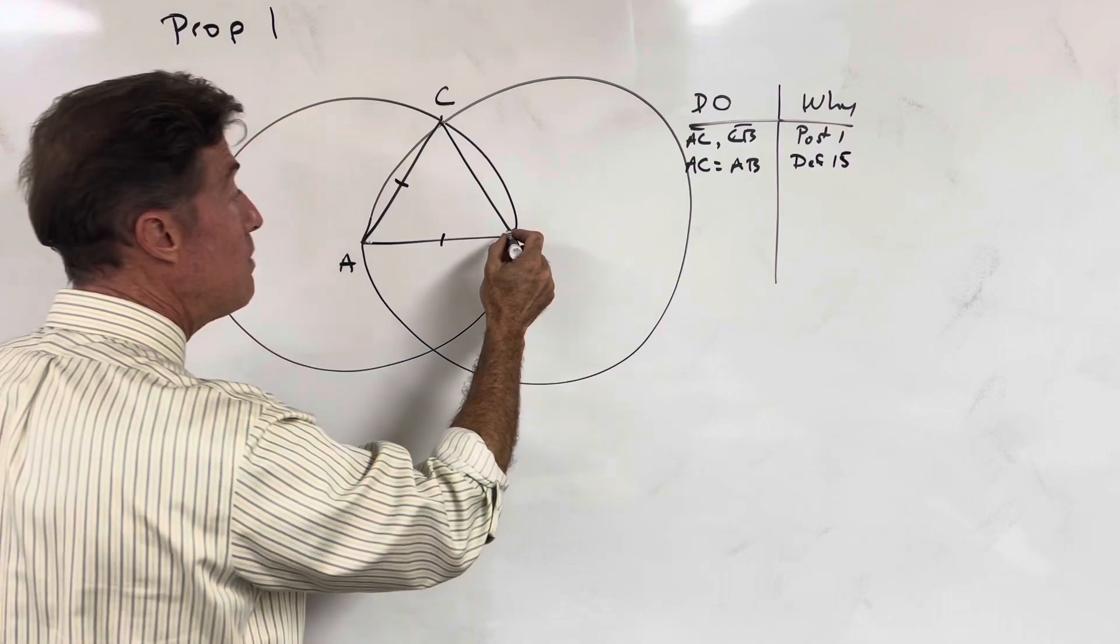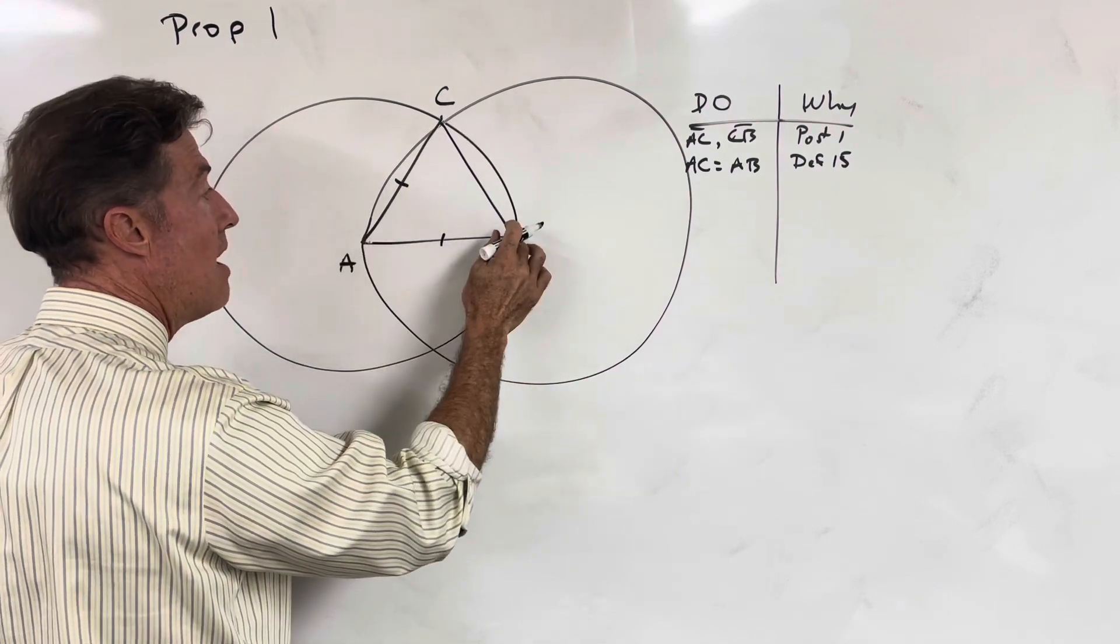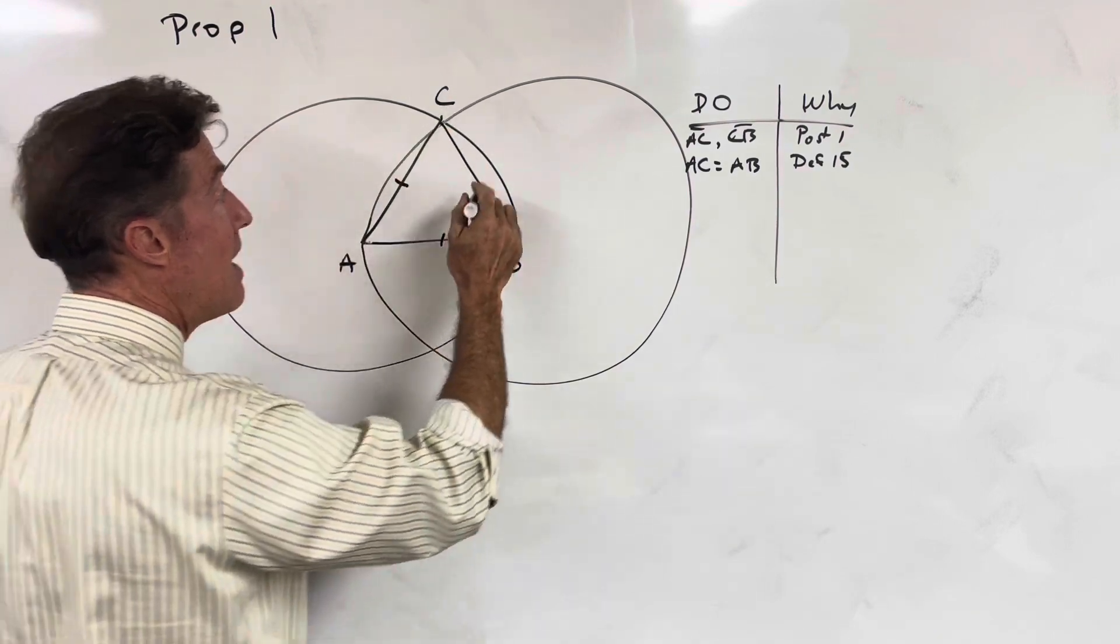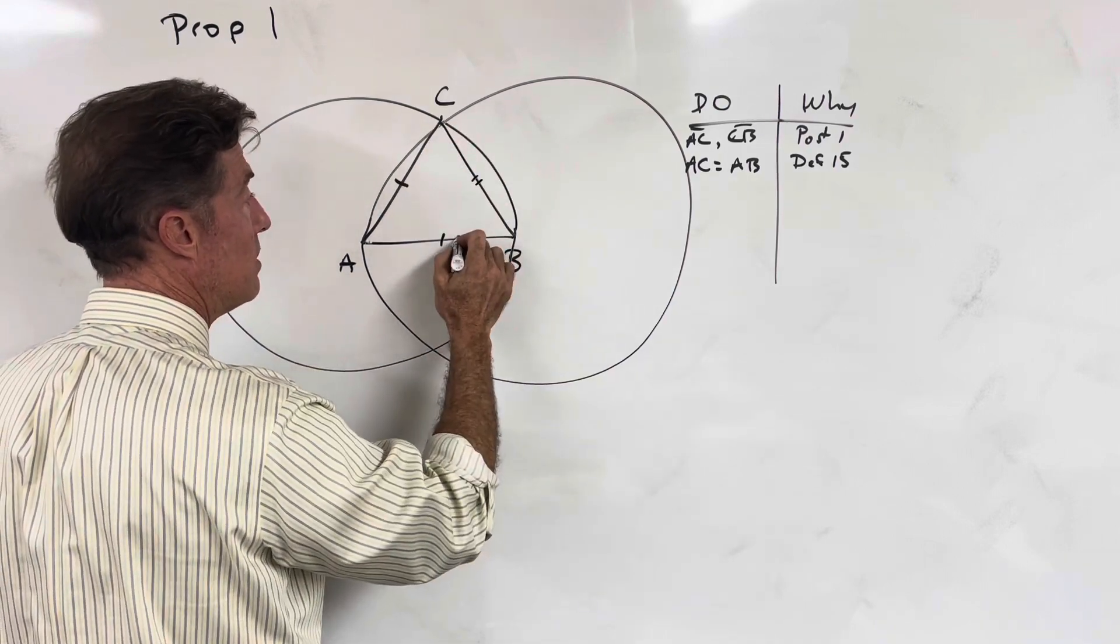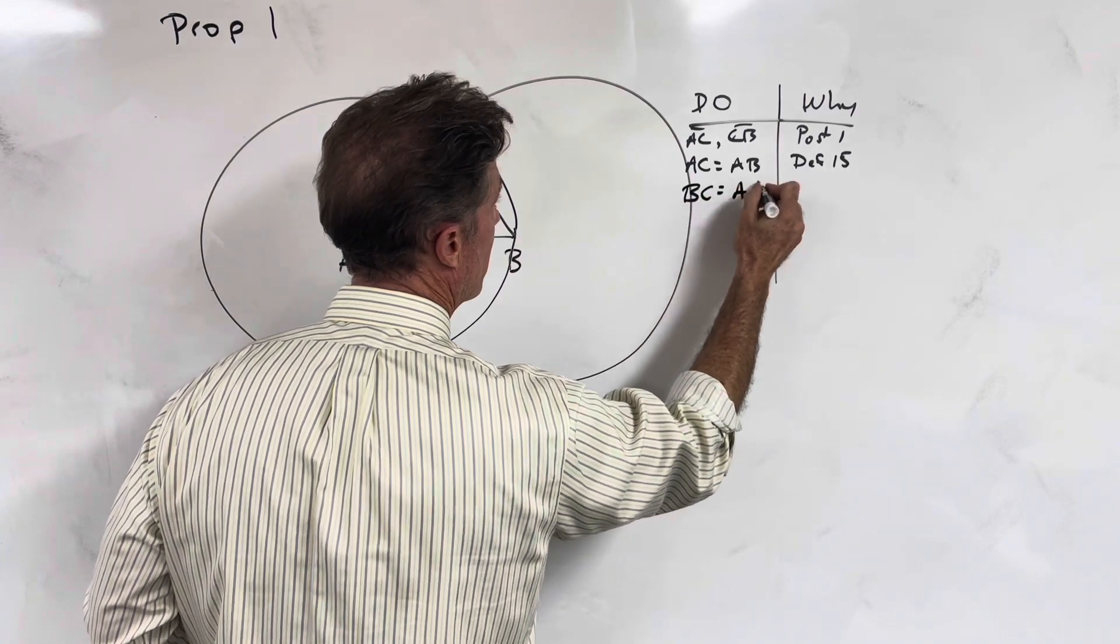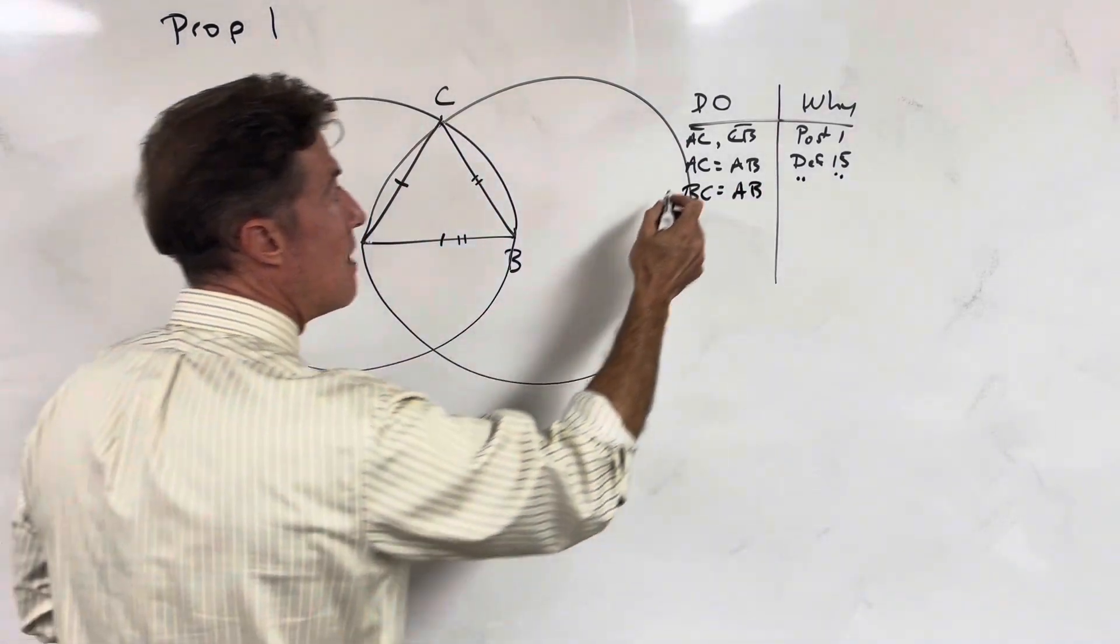Likewise, in circle B, we have two lines, BC and BA, coming from the center of the circle and falling on the circumference of circle B. That makes these radii equal. So BC is equal to AB. Likewise, from our definition of a circle.